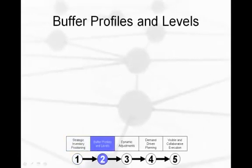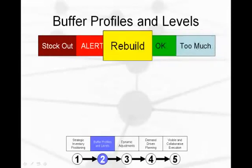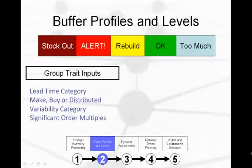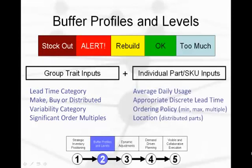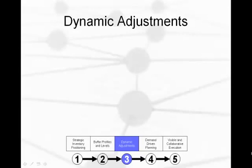The next part of the DDMRP solution involves setting buffer profiles and levels. Now that we know where to position inventory, we have to set and manage inventory levels. Levels will be managed by the use of an intuitive color coding system: light blue for too much, green for OK, yellow for rebuild, red for alert or warning, and dark red for stock out. Items are grouped into buffer profiles by like attributes with regard to lead times, whether they are made, bought, or distributed, how variable they are, and whether there are significant order multiples involved. These globally managed group part traits are then combined with key individual item attributes — this combination creates a unique buffer level and zonal distribution for each item.